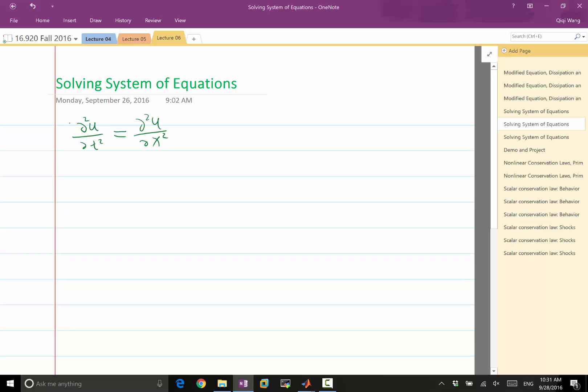To see that, let us use two auxiliary variables. Let's do phi and psi. So let's introduce these two variables. And phi is defined as the derivative of u to t. And psi is defined as the derivative of u to x.